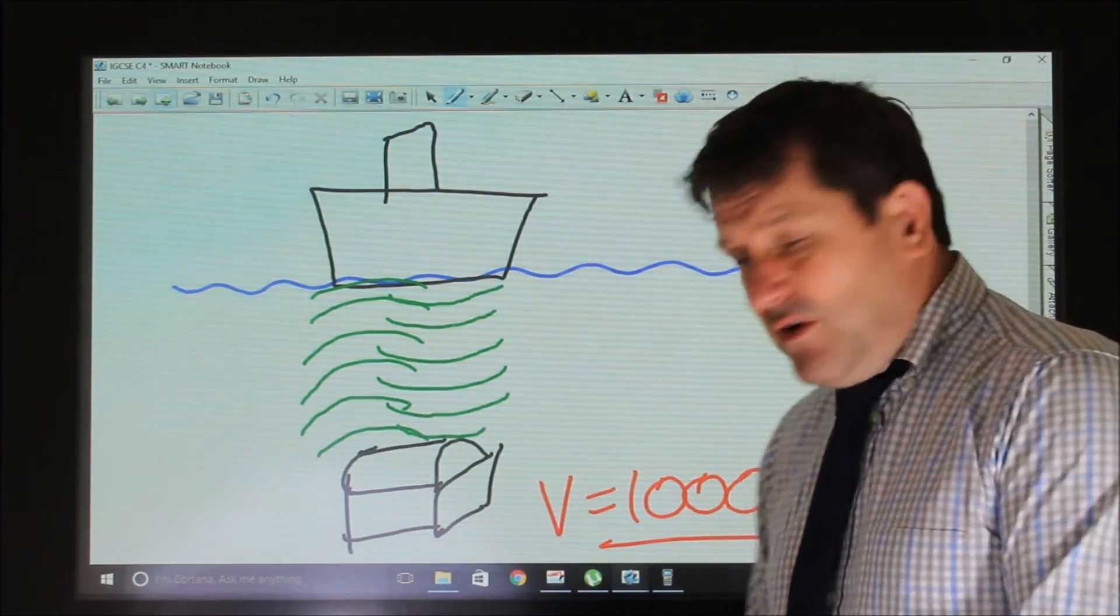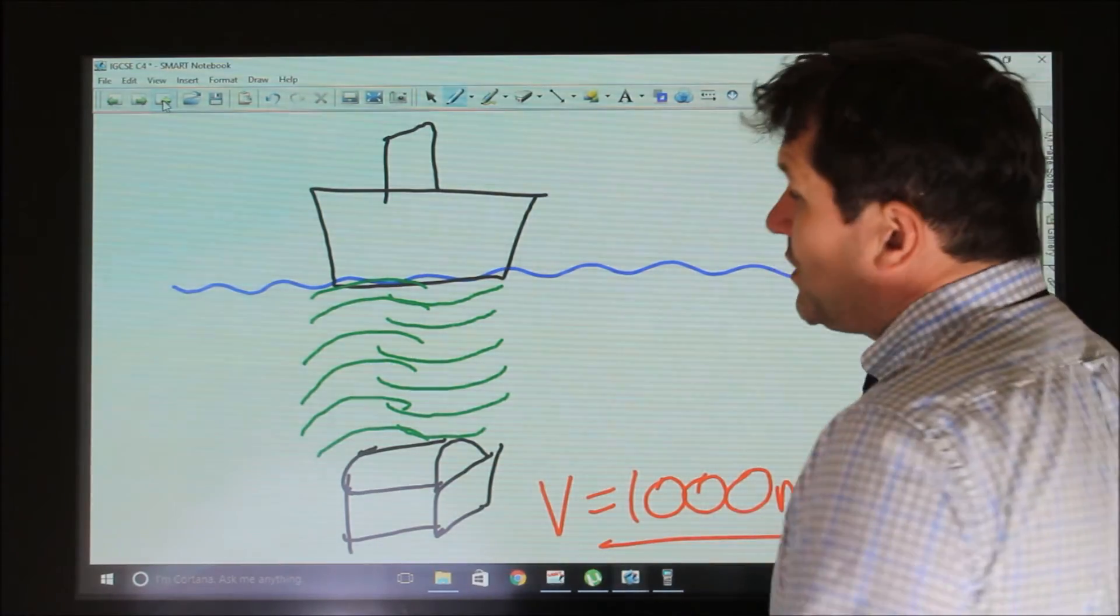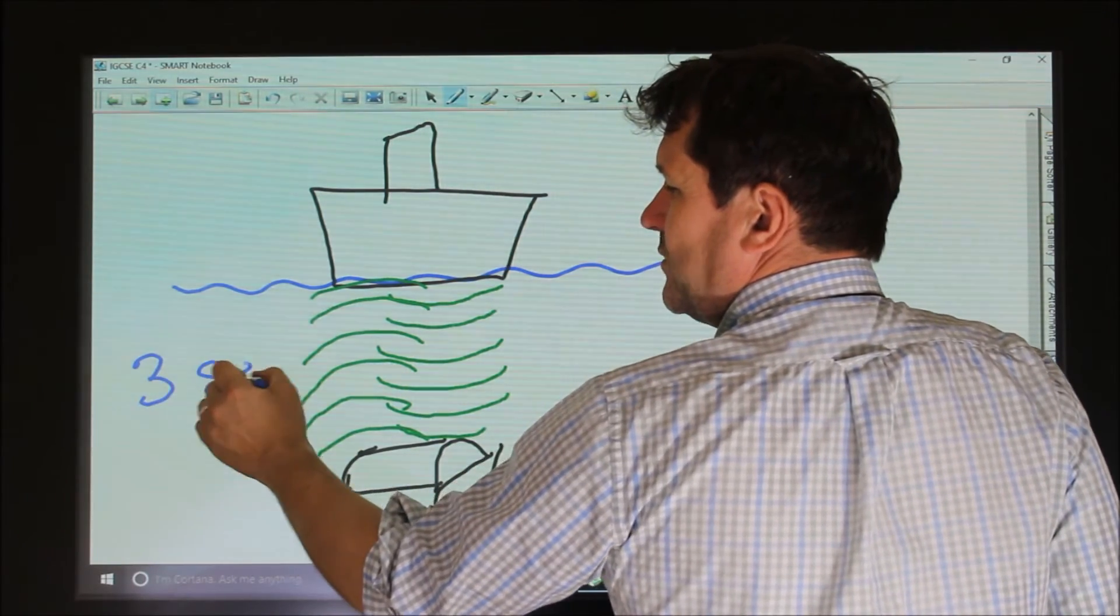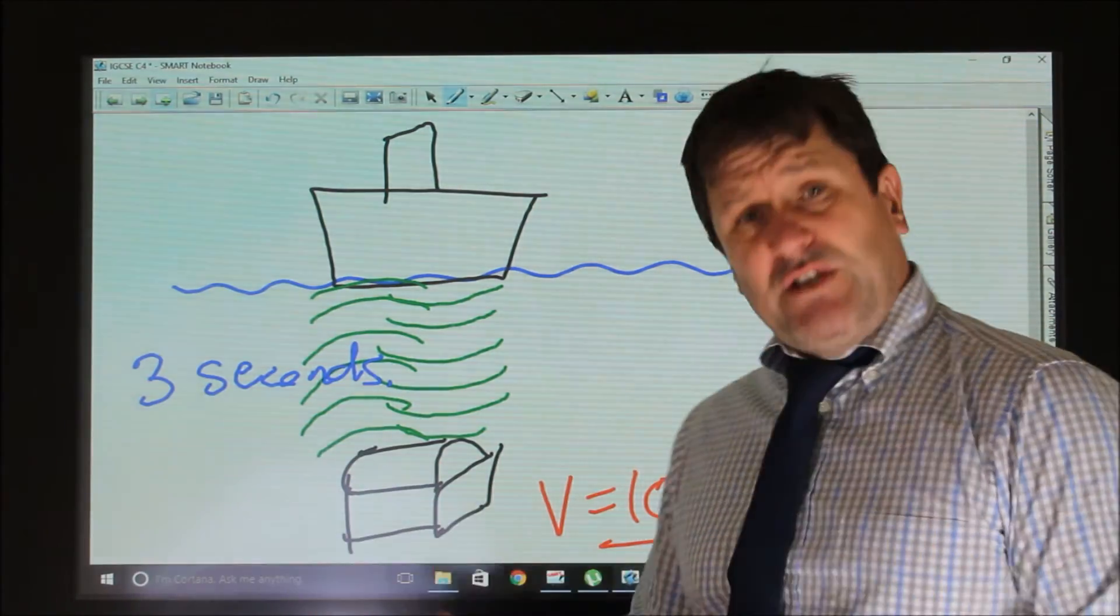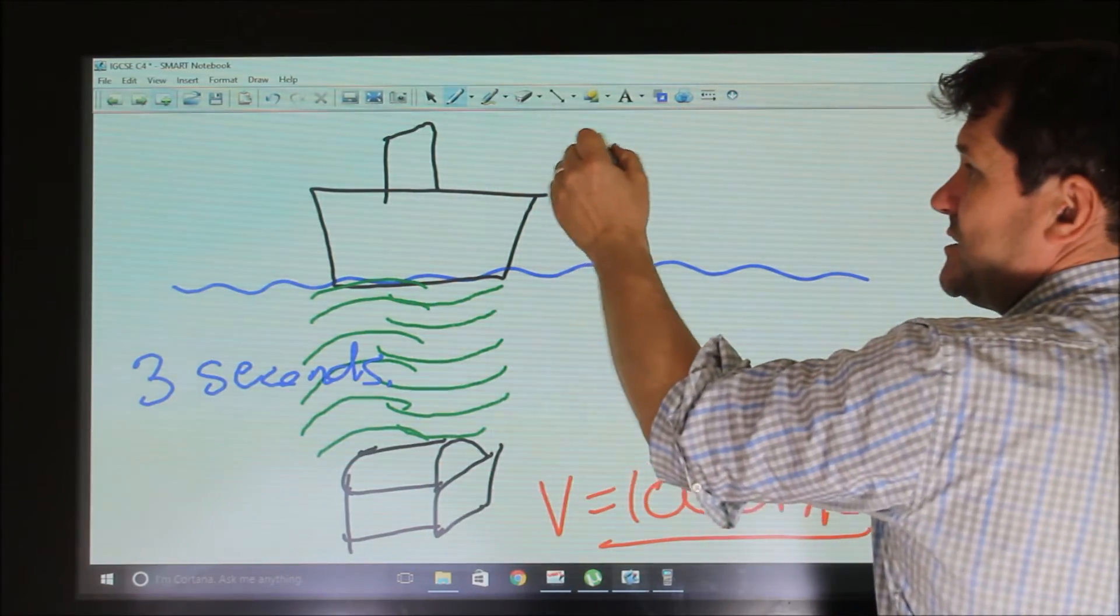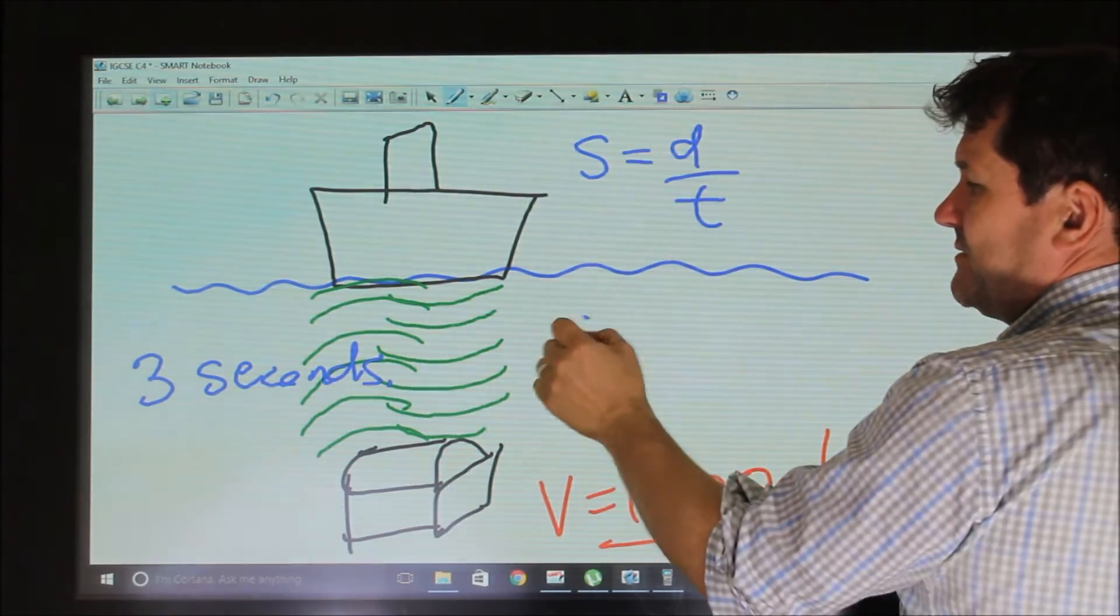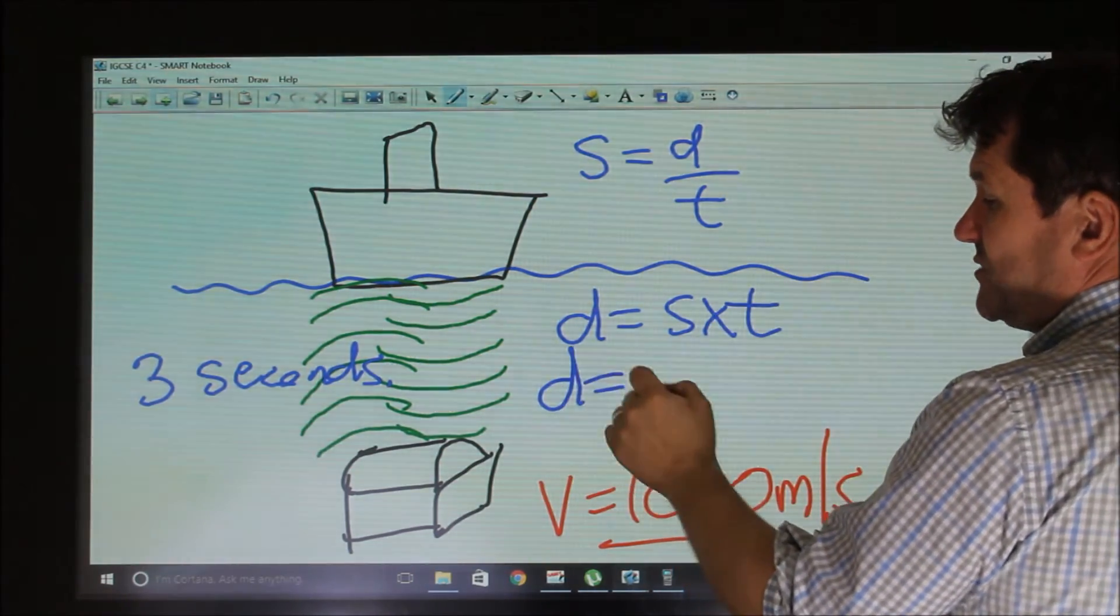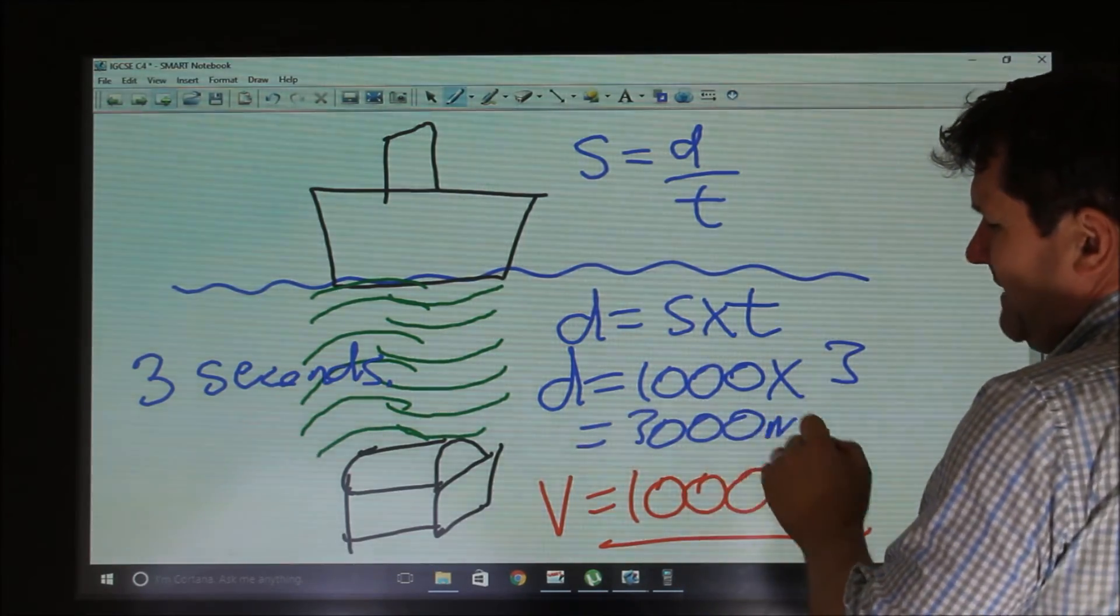This is really quite straightforward. So if, for example, the sound wave took 3 seconds to return, so if our time period was 3 seconds, students find this quite straightforward because they would say speed equals distance divided by time. So distance equals speed times time. So distance equals 1,000 times 3, which equals 3,000 metres.